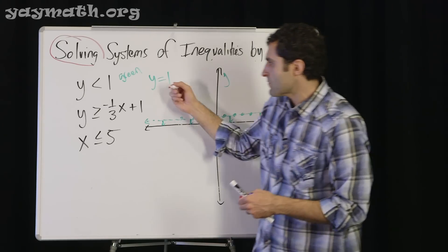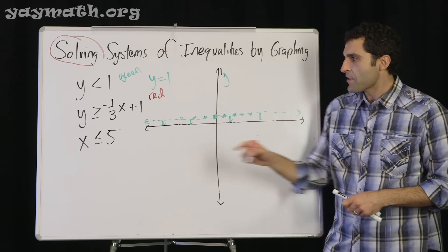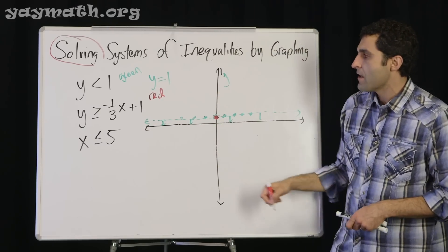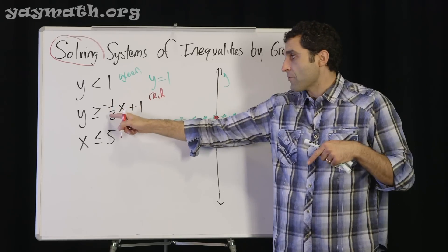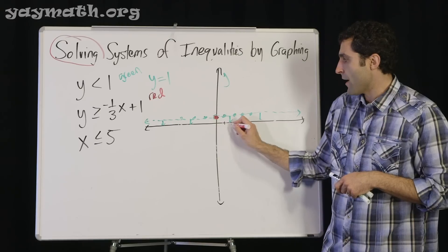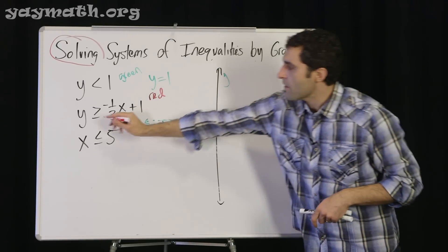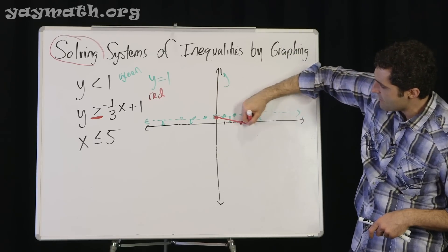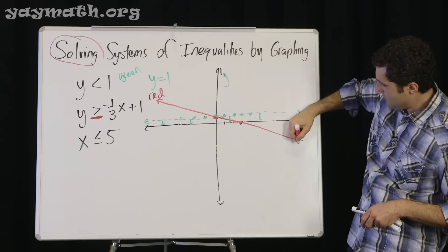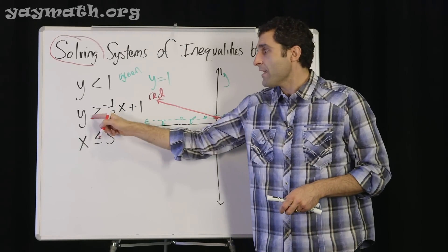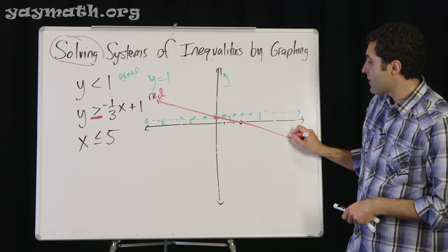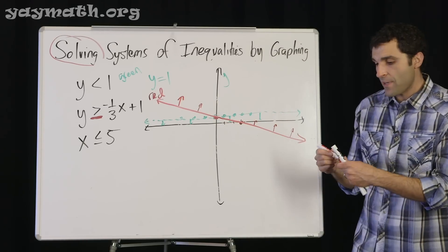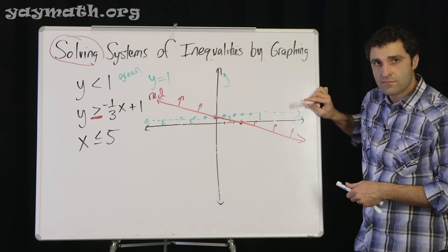Moving on to the red line: y equals mx plus b, with a y-intercept of 1 and a slope of negative one-third — down 1, right 3. We plot the points and form our line. Since we have 'or equal to,' this is a solid line. The inequality says greater than, meaning we shade up from this red line.